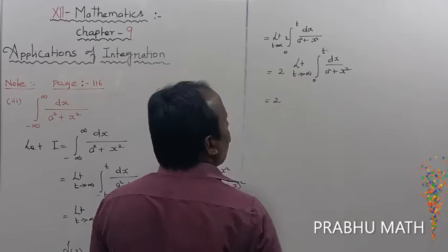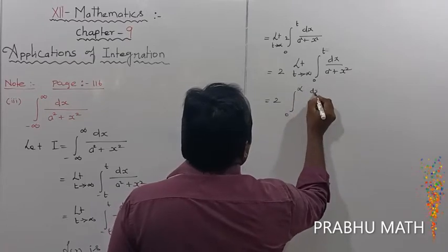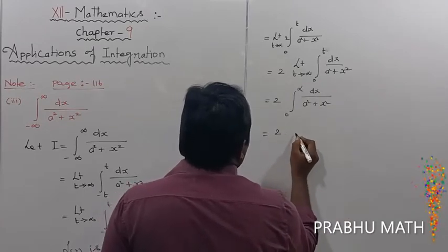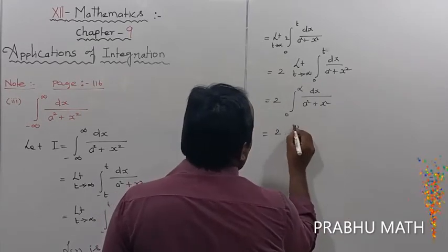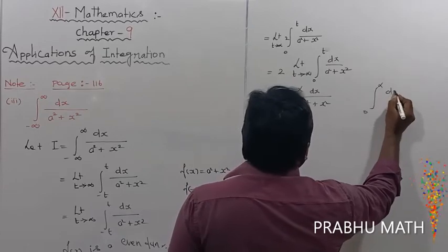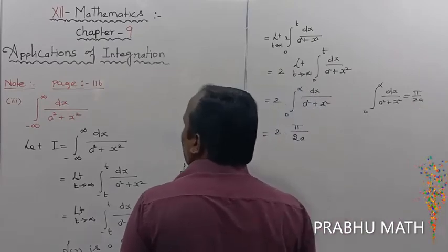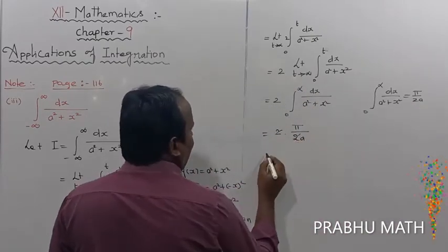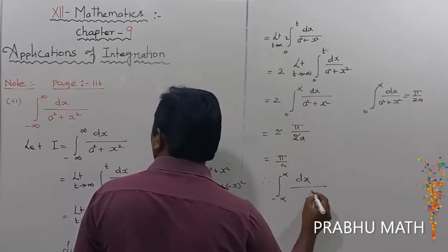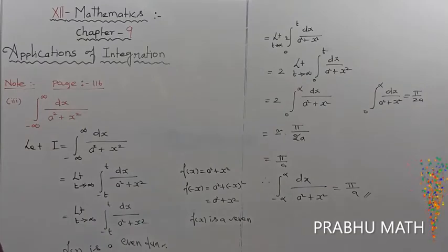That is equal to 2 times pi divided by 2a. So the result for the integral from 0 to infinity of dx divided by a squared plus x squared is equal to pi divided by 2a — that is note number 1. The 2's cancel, giving us pi by a. Therefore the integral from minus infinity to plus infinity of dx divided by a squared plus x squared is equal to pi by a. We get the solution for note number 3.